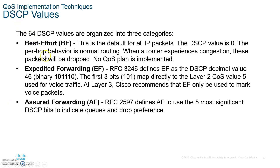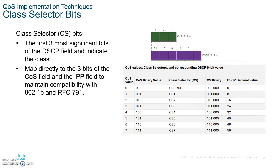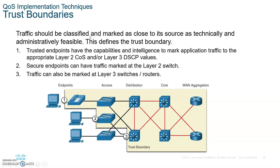With DSCP codes, you have 64 different choices you can create using the six bits. You have best effort — which means a zero value in the DSCP — and expedited forwarding, which uses the binary value 101110. The most significant five bits of the DSCP are used for assured forwarding classes. Here are the different classes with their drop preference and corresponding DSCP field values, and here is a typical setup of the class selector bits.